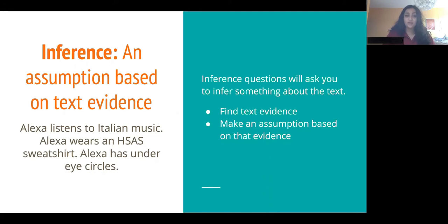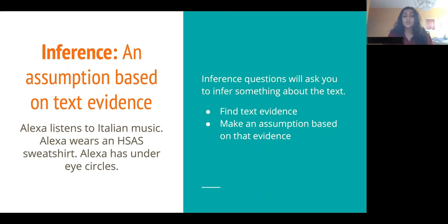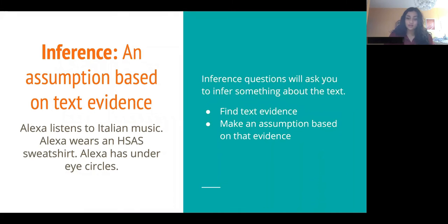So an example of that would be if reading those three sentences down there: Alexa listens to Italian music, Alexa wears an HSAS sweatshirt, Alexa has under eye circles. Choose one of those sentences and make an inference about Alexa based on the evidence. For example, if you chose the middle sentence — Alexa wears an HSAS sweatshirt — you could infer that she's an HSAS student. It might not be completely accurate. Inferences are kind of guesses; they're never perfect, but they're based on evidence. So inference questions will ask you to infer something about the text. In order to do this, you need to find evidence in the text that relates to what the question is asking, and then make an inference based on it.